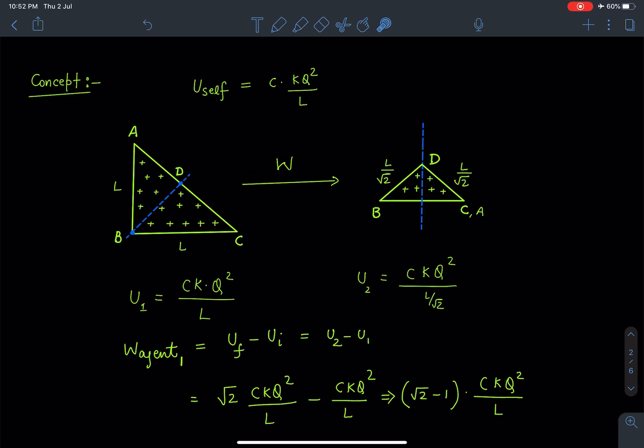So when we are making this first fold, and in that process this work done is W, so we can directly say this work done will be nothing but change in potential energy: finally potential energy minus initial potential energy. So here directly we can say using this formula of self energy, it's kind of dimensional analysis or you can say scaling method.